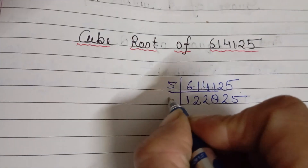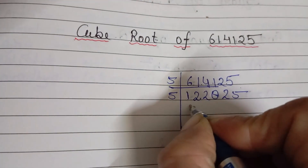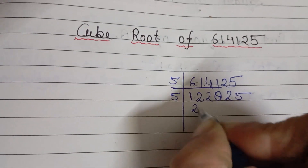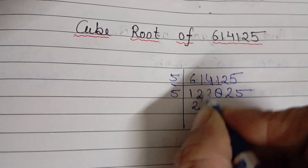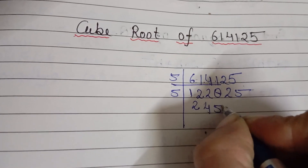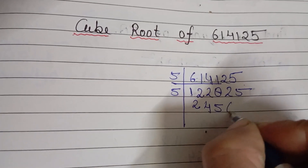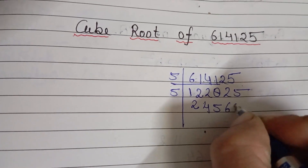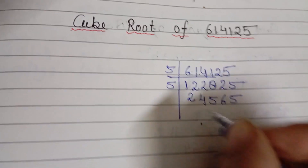Again divide by 5. So 5 into 10, 5; 4 fives are 20; then 5 fives are 25; 5 sixes are 30 and 5 fives are 25.